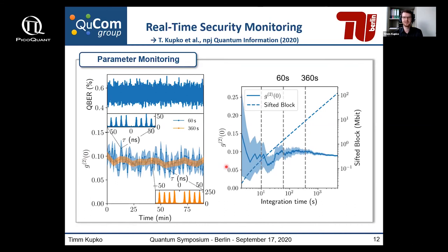We also asked ourselves what is a reasonable integration or accumulation time to estimate the g²(0) value. Even after 60 seconds there is already a reasonable error margin, and going to 360 seconds the error becomes even lower. Block sizes of 1 million to 10 million bits are also quite reasonable for classical key reconciliation schemes.